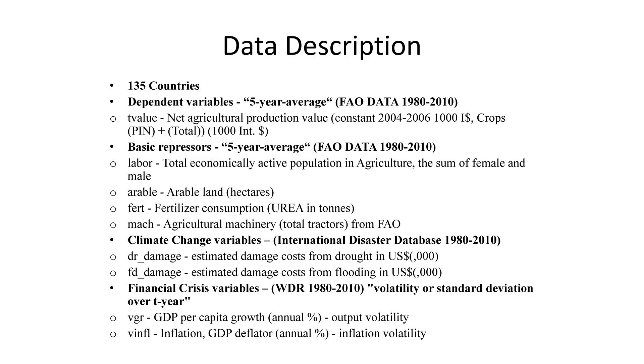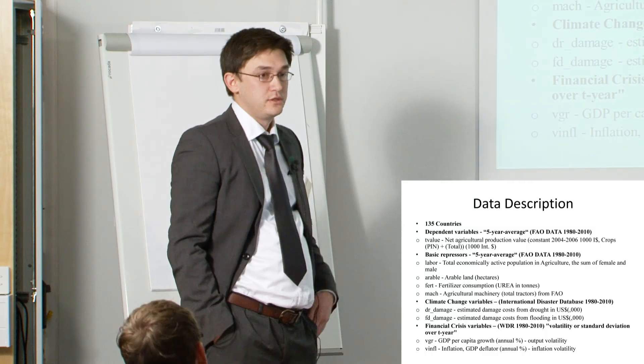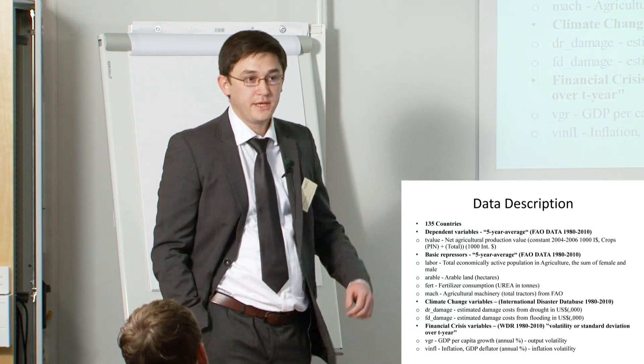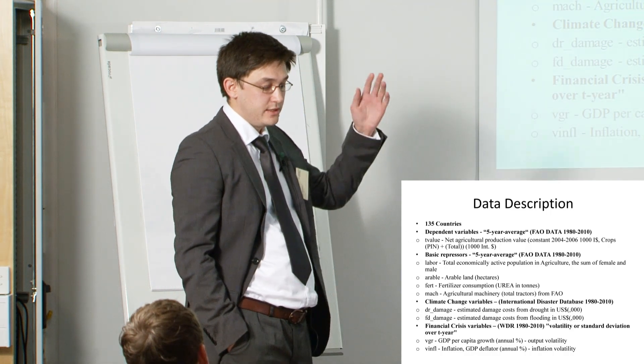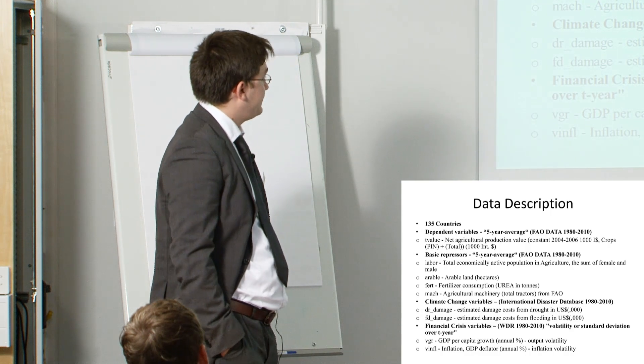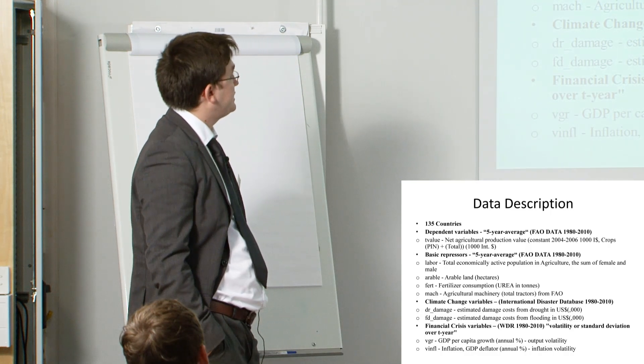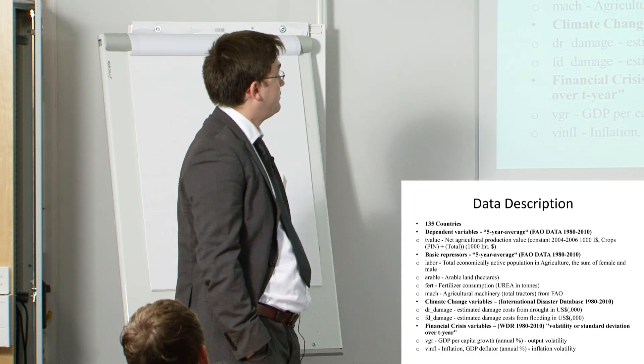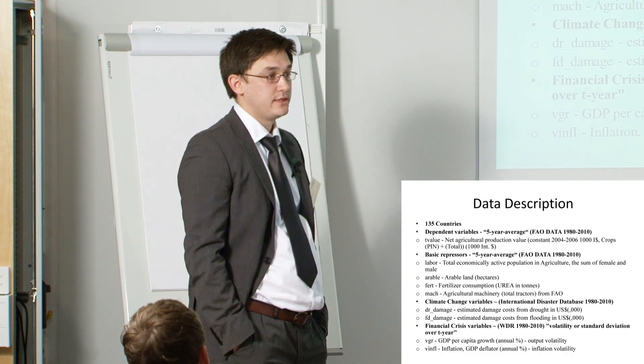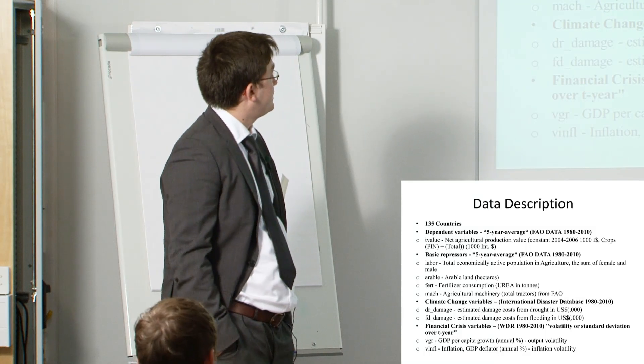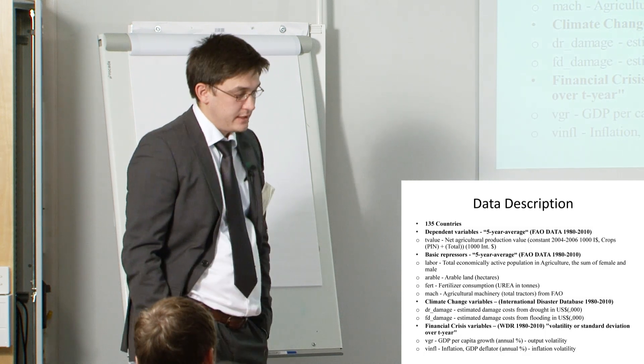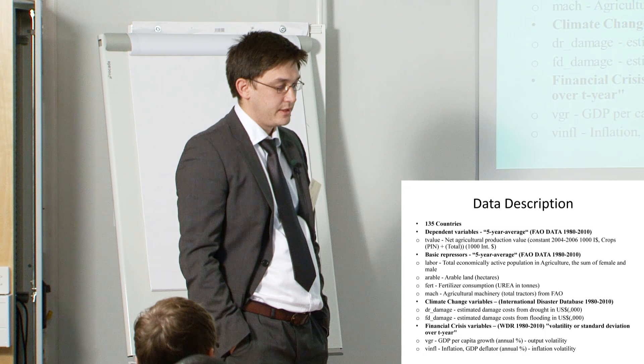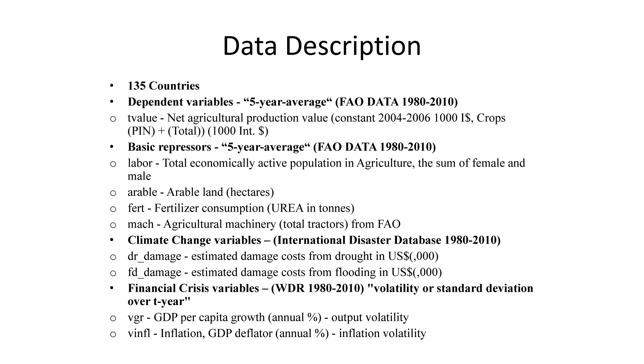For the analysis we have 135 countries and our dependent variable is the net agricultural production value. Because we have included financial crisis variables, it's very difficult to see if we take into account every year. That's why we have five year average so that we could see the volatility of these variables. We have basic regressors production inputs. We got it from the FAO data which has a lot of problems. We struggled a lot. For inputs we have labor, land, and fertilizer machinery.